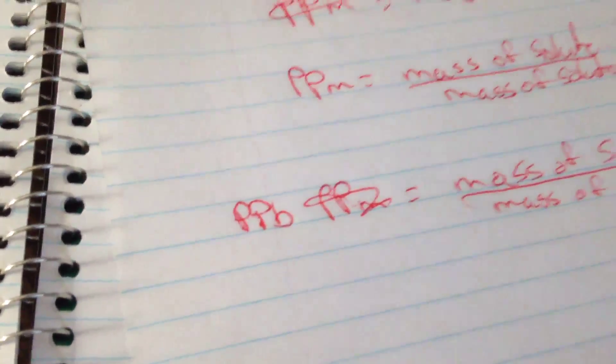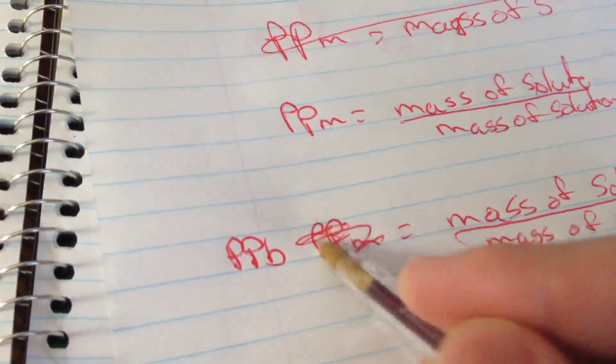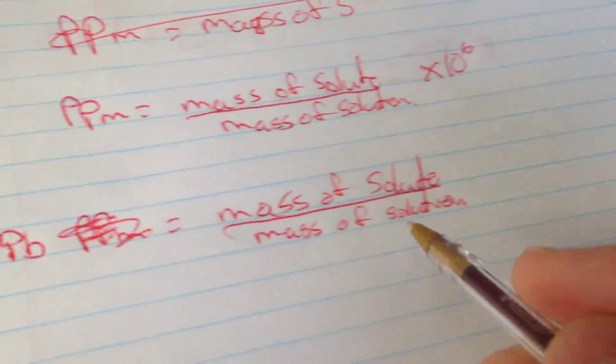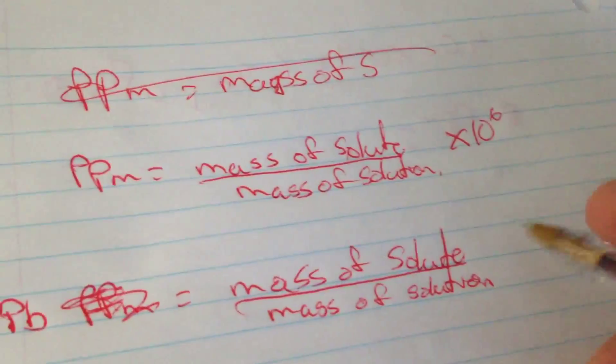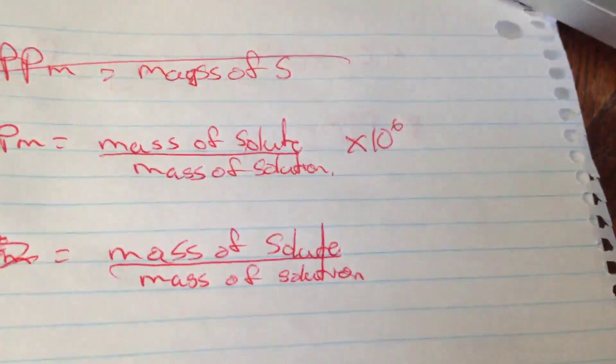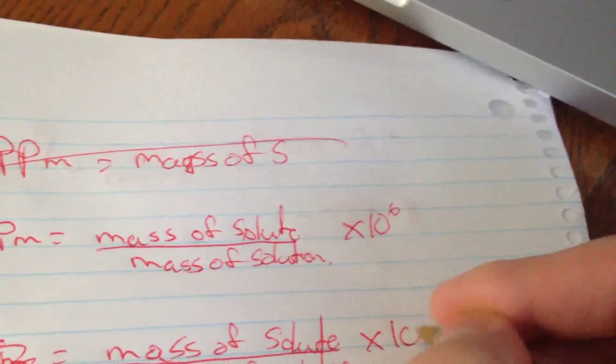parts per billion, I should say P, P, B, parts per billion is very similar. So parts per billion is just mass of solute over the mass of solution. Instead of 10 to the 6, like a million, billion is times 10 to the 9.